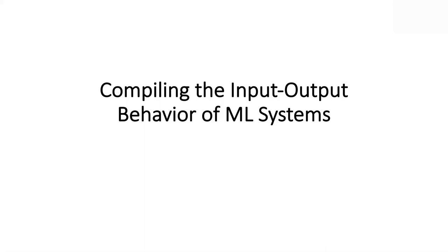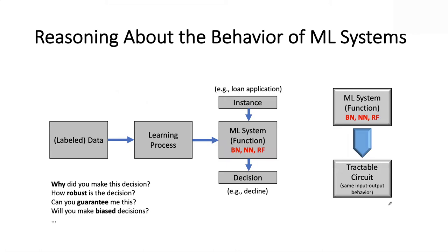Here's the big picture again from last time: we have a machine learning system learned from data, and the system is typically numeric. But we're going to capitalize on the fact that even though it's numeric and learned from data, it often represents a discrete function — the input instance is a discrete object and the output is also discrete. Our goal is to take this system and compile its input-output behavior in symbolic form so we can do the kinds of reasoning we mentioned last time.